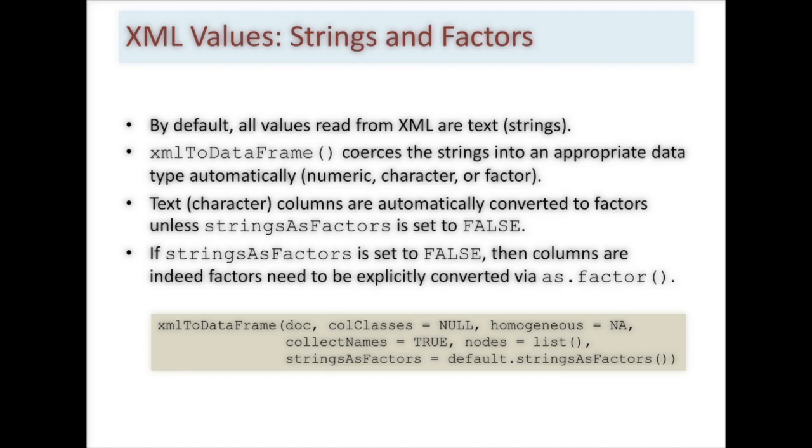Here's a more complete explanation of the XML to data frame function. One thing that's notable is that by default all values are read from the XML file and converted to strings. Unfortunately, when that happens and it gets read into the data frame, XML to data frame coerces the strings into an appropriate data type automatically. So it tries to figure out if something is a number and makes it numeric. If something is text it's going to try to make it text, and unfortunately it's going to try to treat most text as factors.